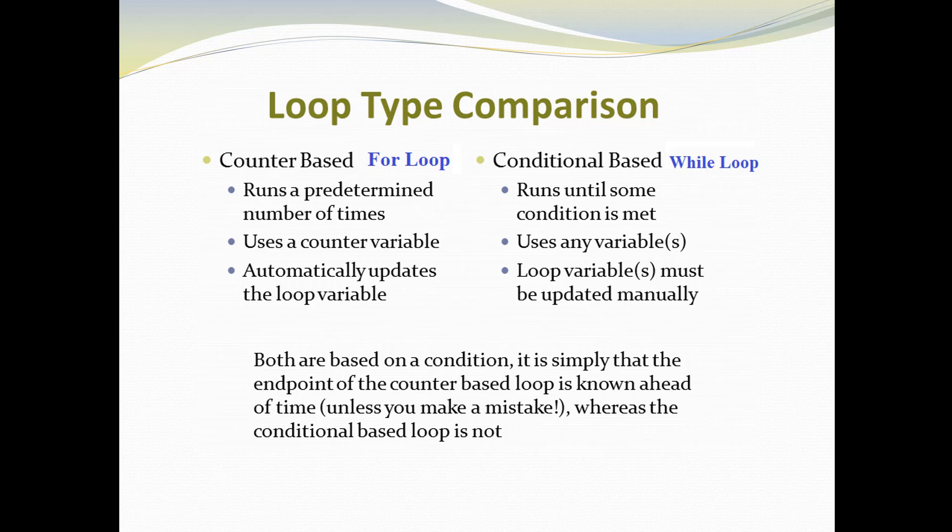The for loop runs a pre-determined number of times. If we know the loop should run 5, 20, or 30 times, we use a for loop. This is why it is called a counter-based loop — we use a counter variable that counts how many times the loop runs, and it automatically updates. With while loops, we write a condition, and the loop runs as long as that condition is not met.